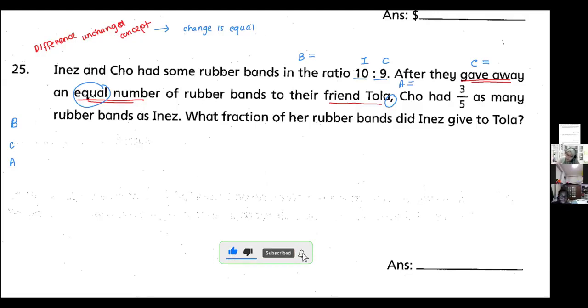The comma tells us what happens next—after the change is my after. Cho had 3/5 as many rubber bands as Inez. This is Cho, this is Inez. What fraction of her rubber bands did Inez give to Tola? I want to know the given over Inez. This is what I want to find—the given over Inez's number of rubber bands.